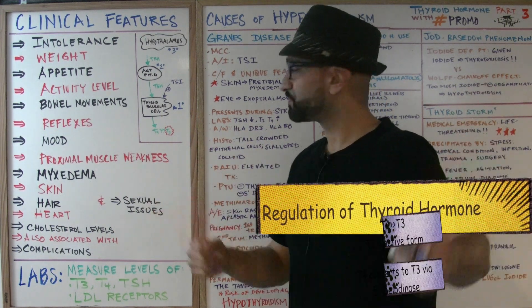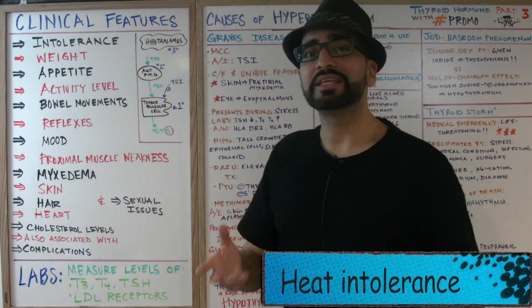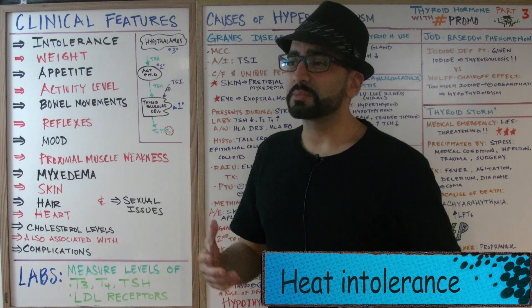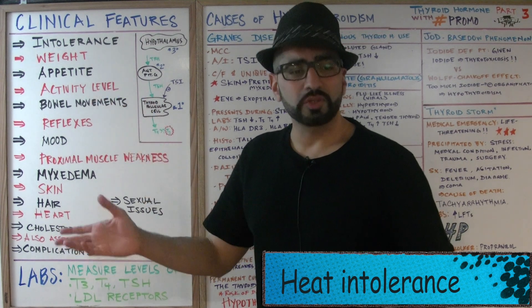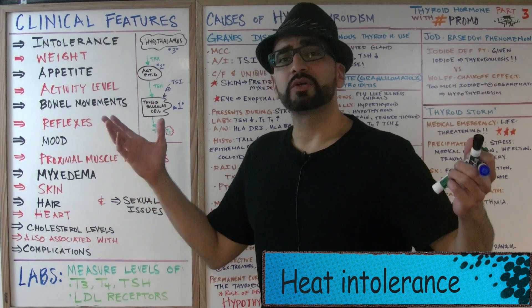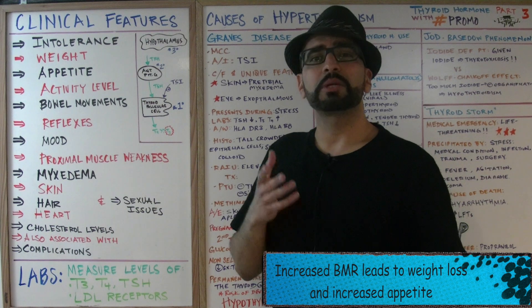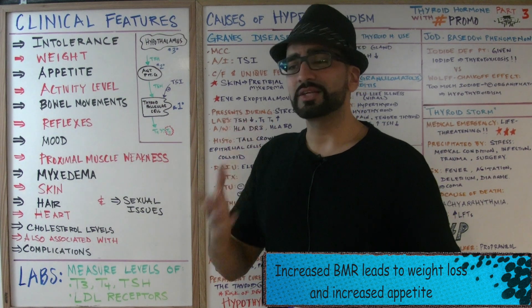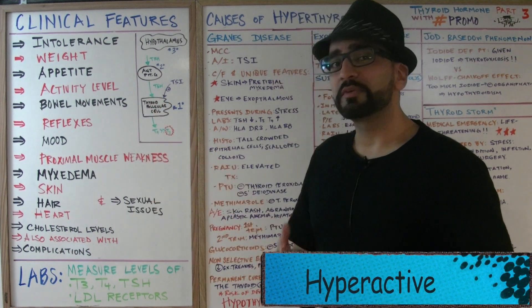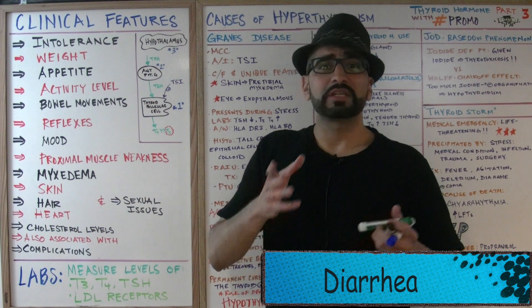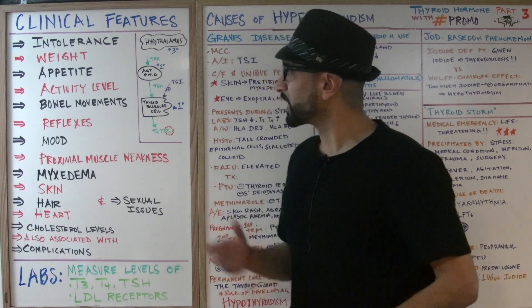When we have too much T4 and T3, we see several clinical features. The first is heat intolerance — the patient sweats a lot while others feel cold. Weight is decreased because of a high basal metabolic rate (BMR), which continually breaks down fats and glycogen, with a constantly increased appetite. Activity levels are very hyperactive, and bowel movements are fast — think diarrhea, the opposite of hypothyroidism.